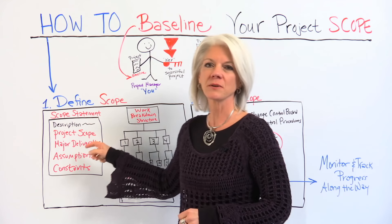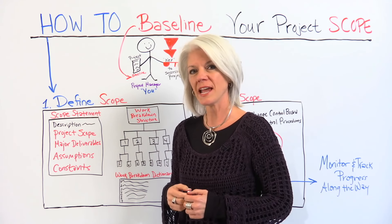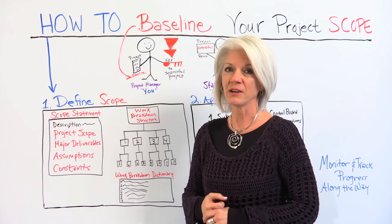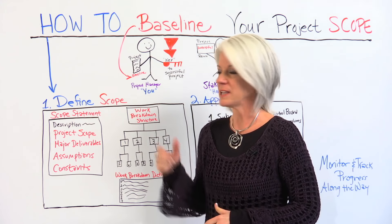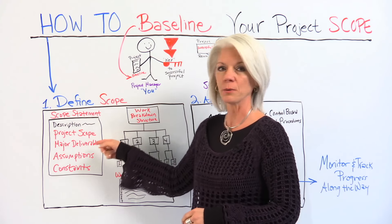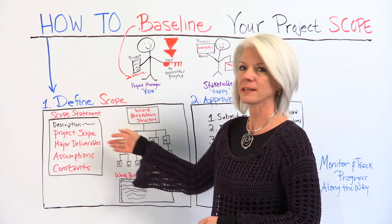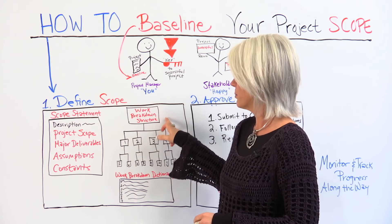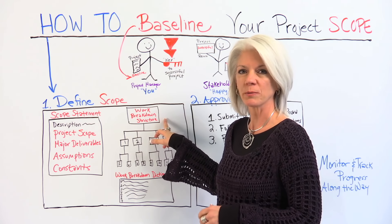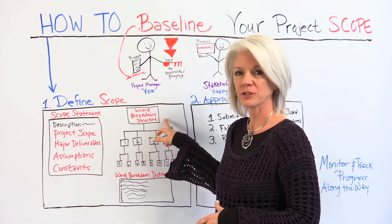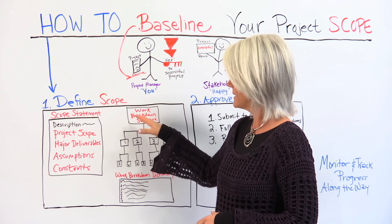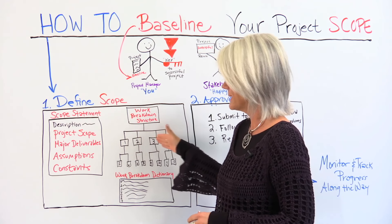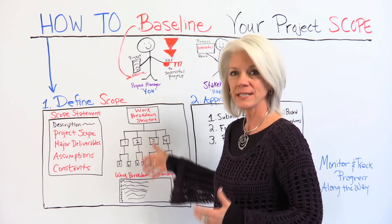The scope statement also includes assumptions and constraints of the project that may or may not impact the scope. We take the scope statement along with the work breakdown structure, because the work breakdown structure takes the work at a high level and continues to break it down into further detail.